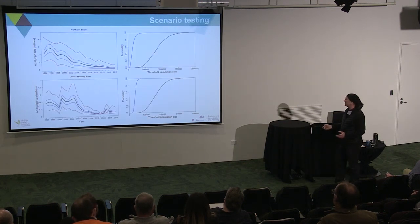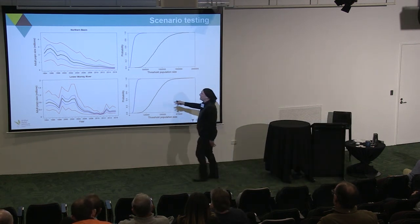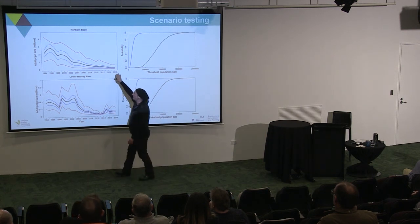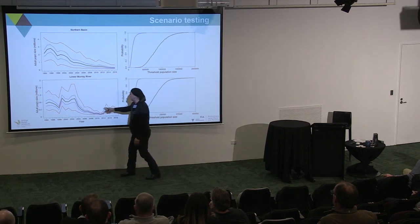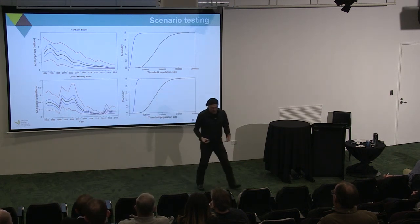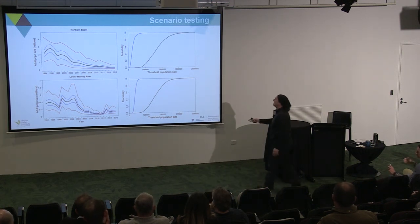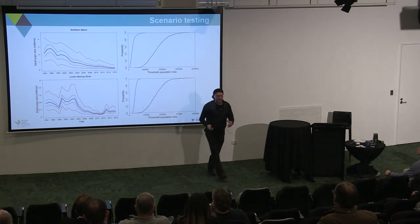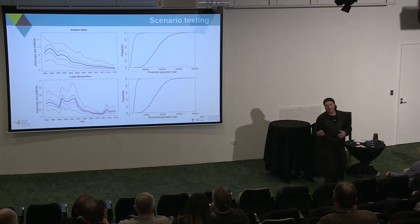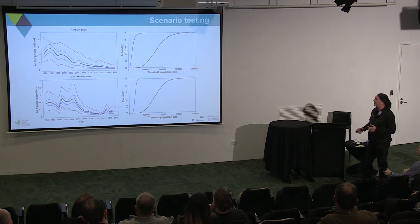What happens if we disconnect Menindee Lakes? In the northern basin we see a long-term decline. In the lower Murray, we still see flow-driven dynamics for Golden Perch. But in the risk curves we see a dramatic shift to the left. Changing the movement dynamics around Menindee affects both the northern basin and the southern basin.